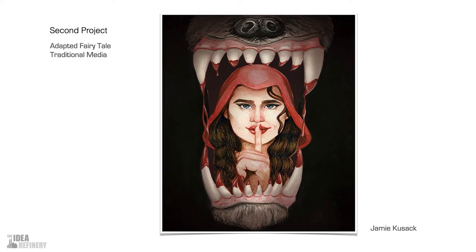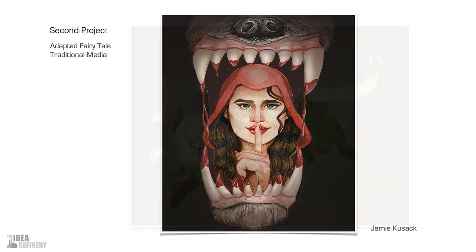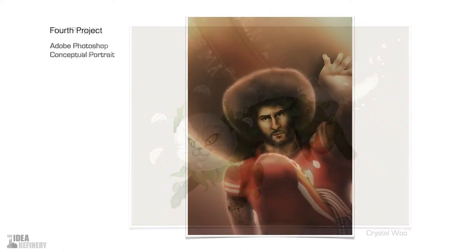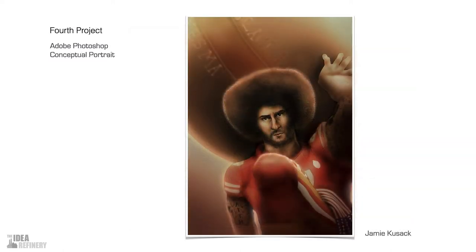As you can see, our first two projects use traditional media. The reason for that is that I think it is important to be familiar with traditional media tools, because as we move to the digital realm for our final two projects, a lot of what we'll be doing is adapting properties of traditional media, especially when talking about digital painting. The first of our digital projects will use Adobe Illustrator to create what I call an everyday monster. Crystal, for example, took the idea of allergies and turned that into a monster, using custom brushes and other unique Illustrator tools. Finally, we'll end with a digital painting. I like to do digital painting in Adobe Photoshop, but if you want to use a program like Procreate, that's fine. Those are the four projects: two traditional media and two digital.